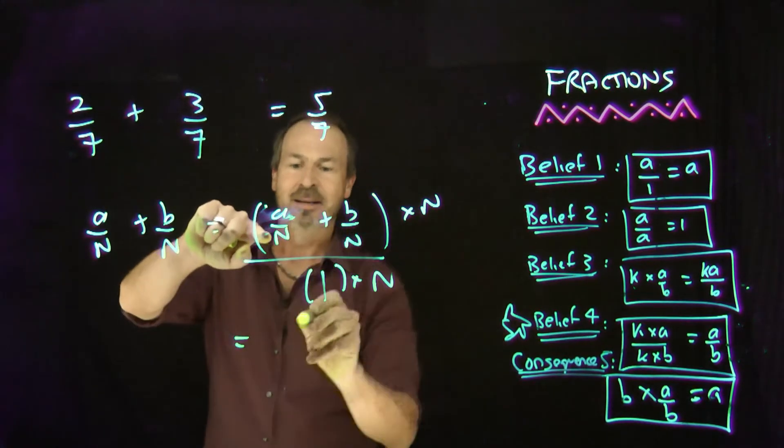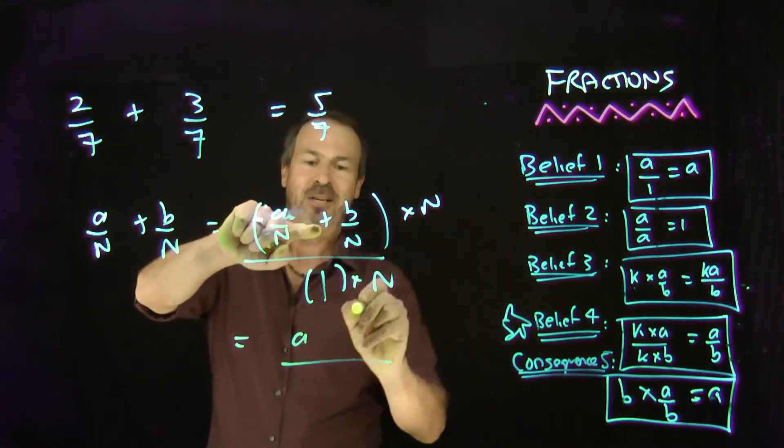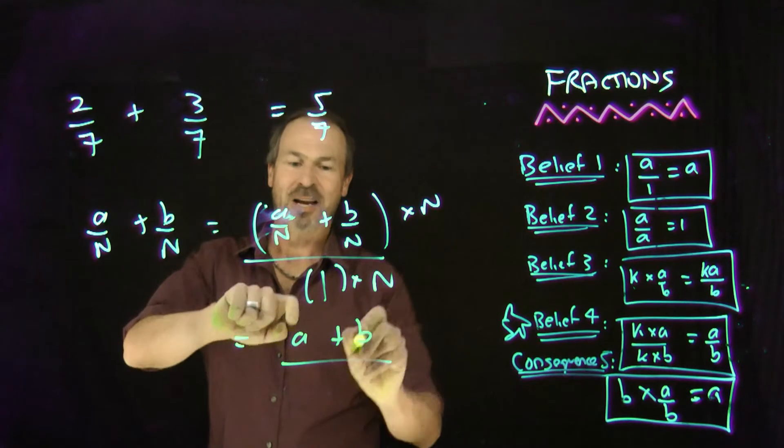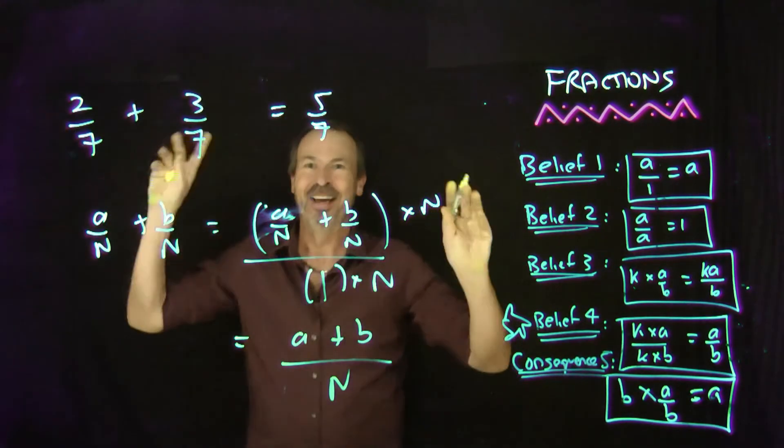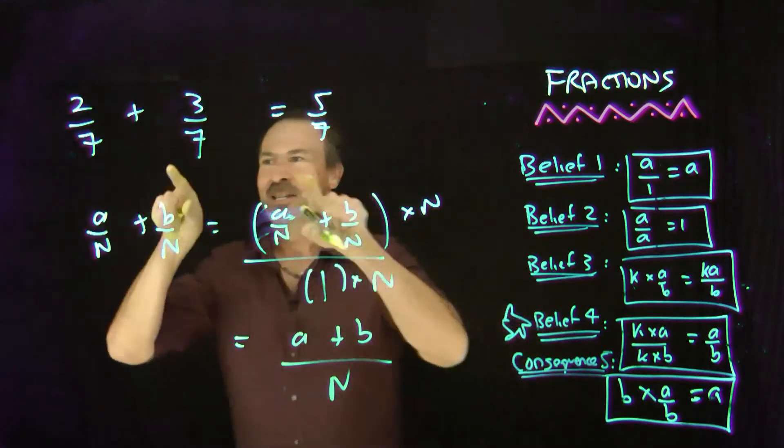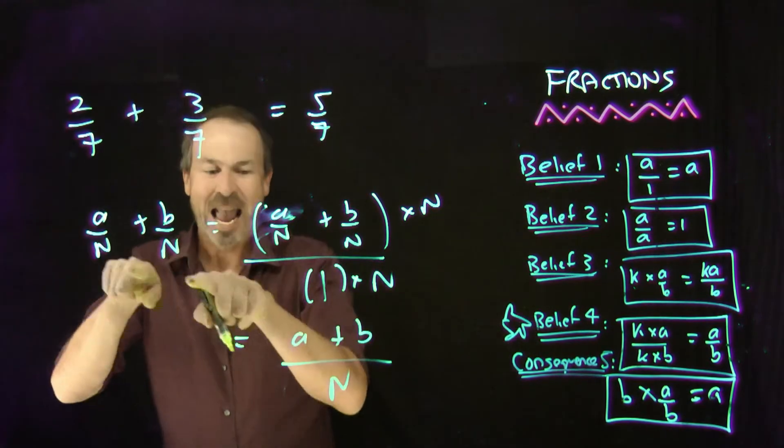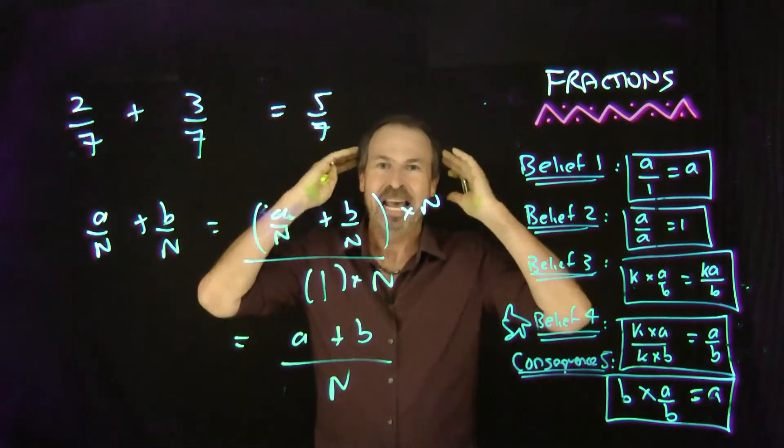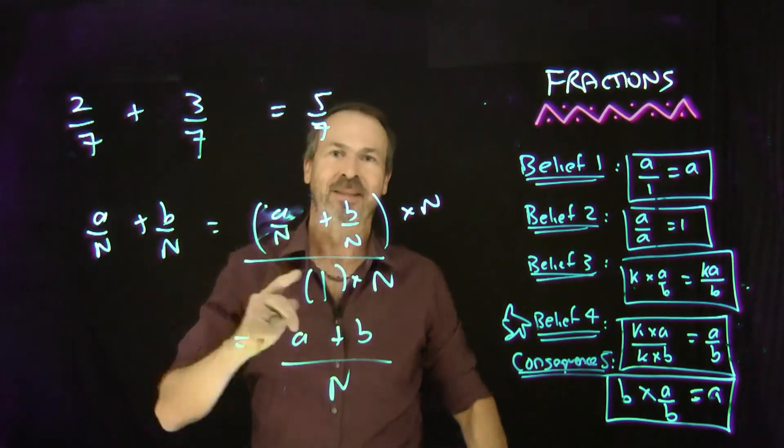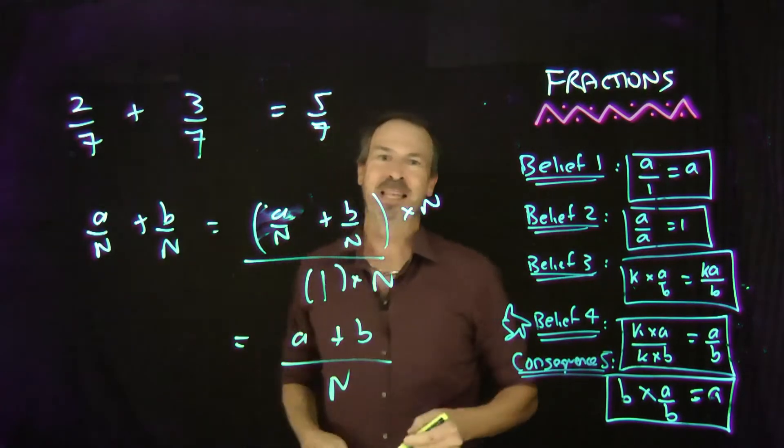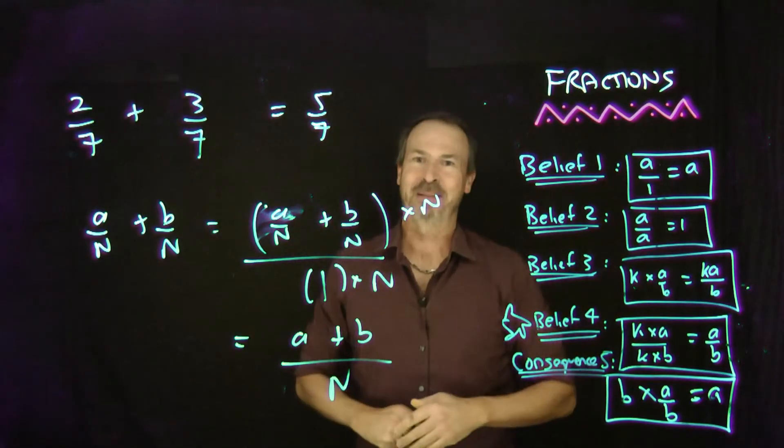a/n times n is a. Plus b/n times n is b. Over 1 times n is n. Yes. Yes. Yes. It's all hanging together. It's all hanging together. So if you've got a common denominator, adding fractions is just as our brain says, the English is saying. 2/7 plus 3/7 is 5/7. Done. Beautiful. And there is the mathematical proof of that. Following from our basic beliefs.